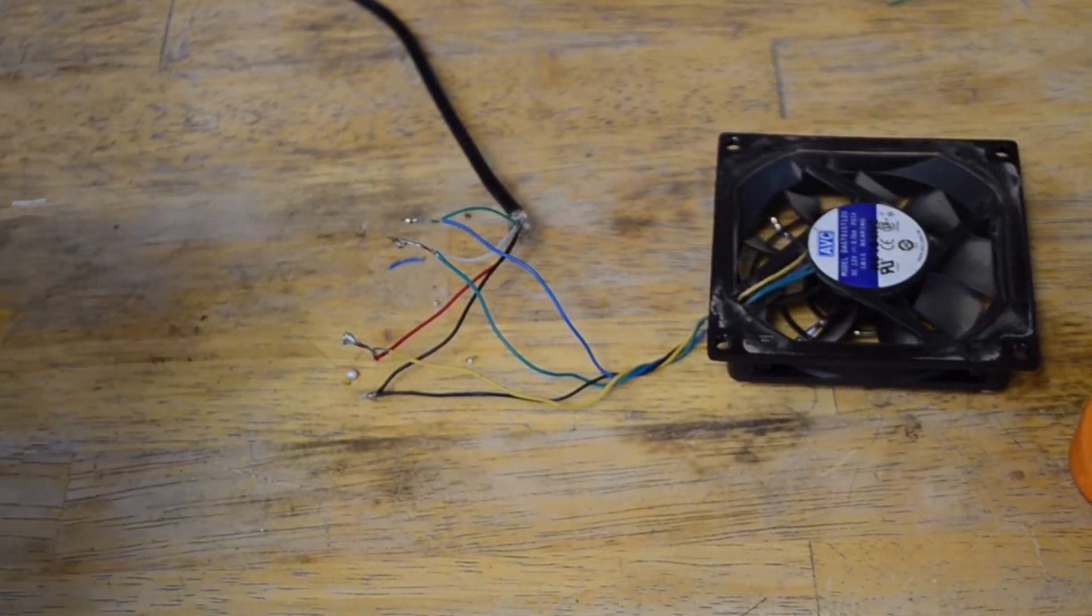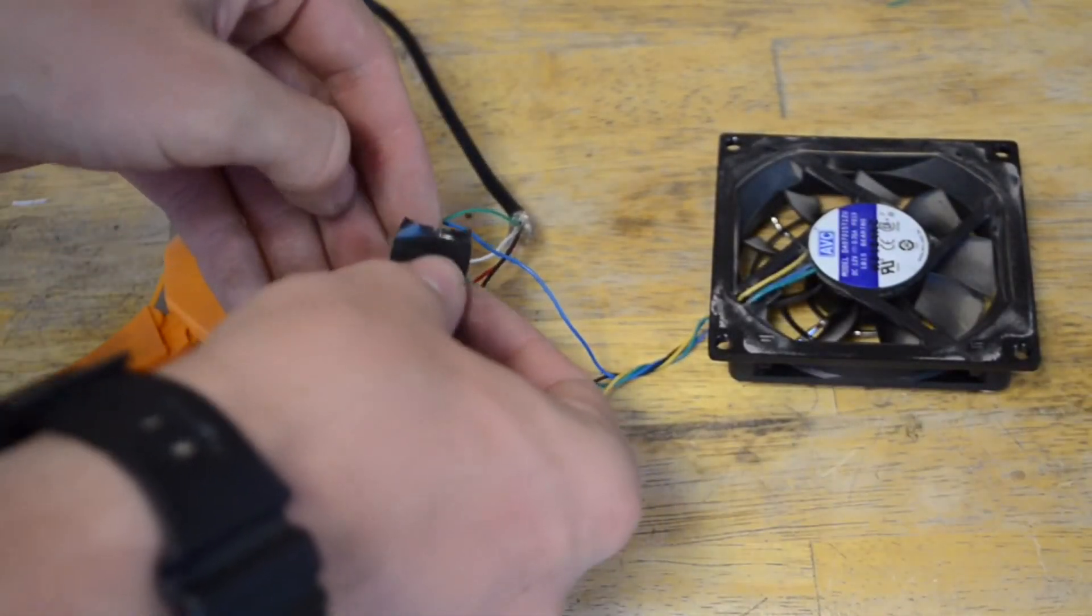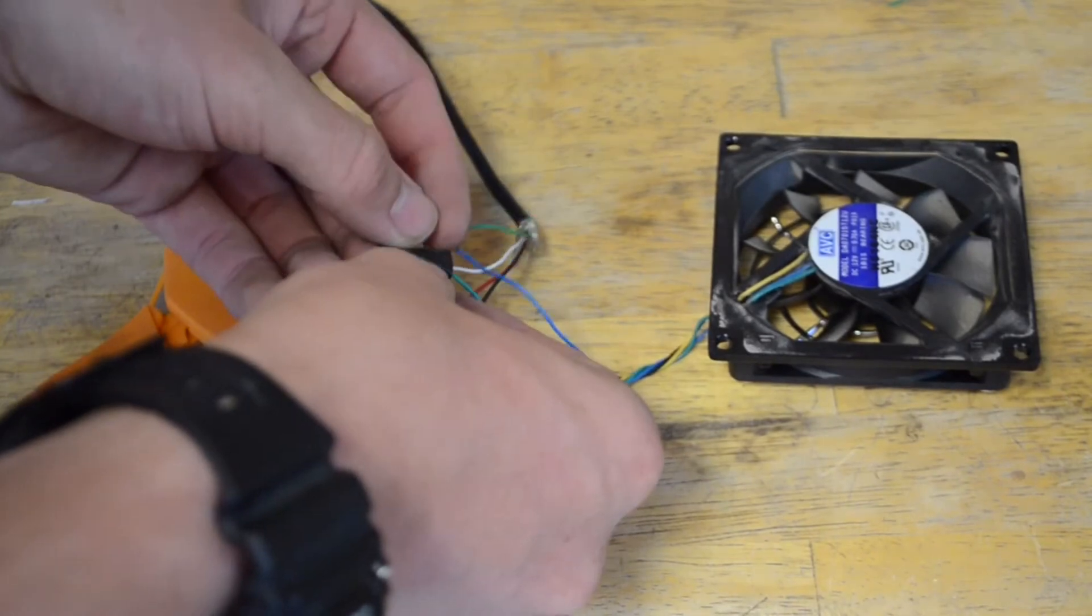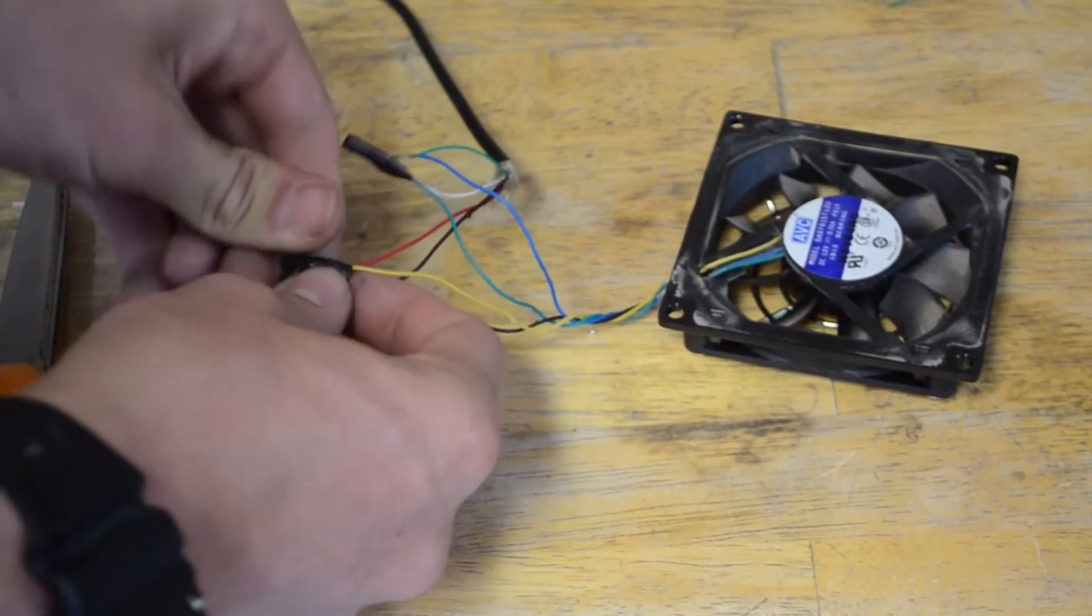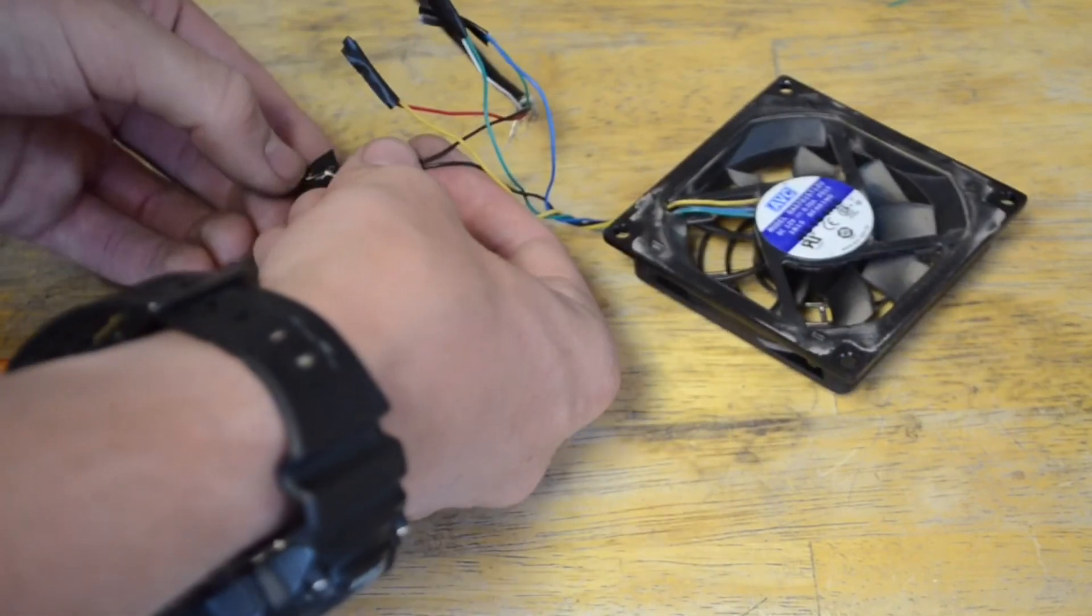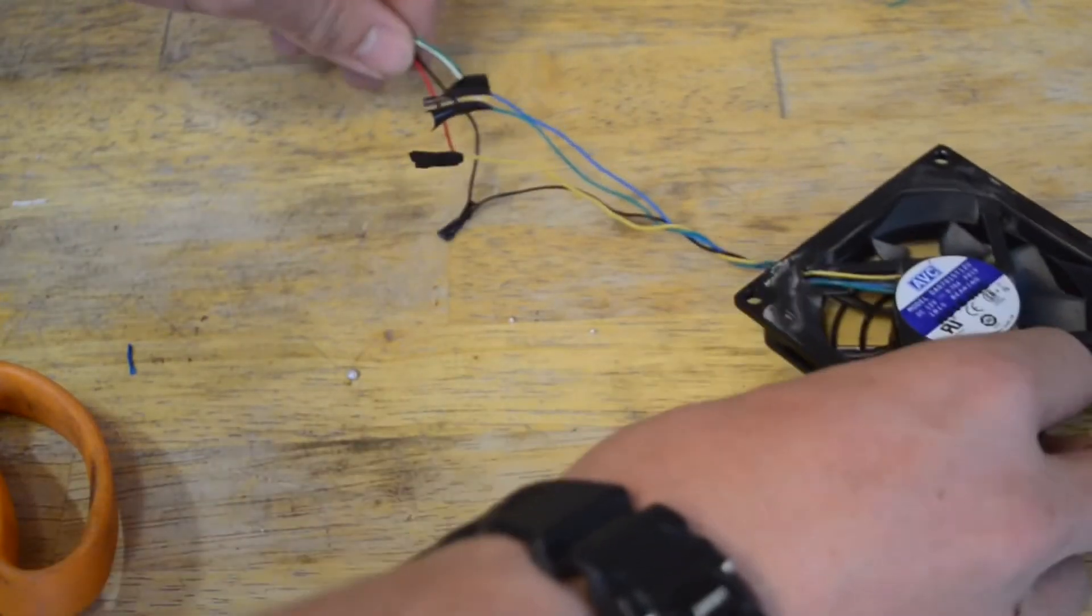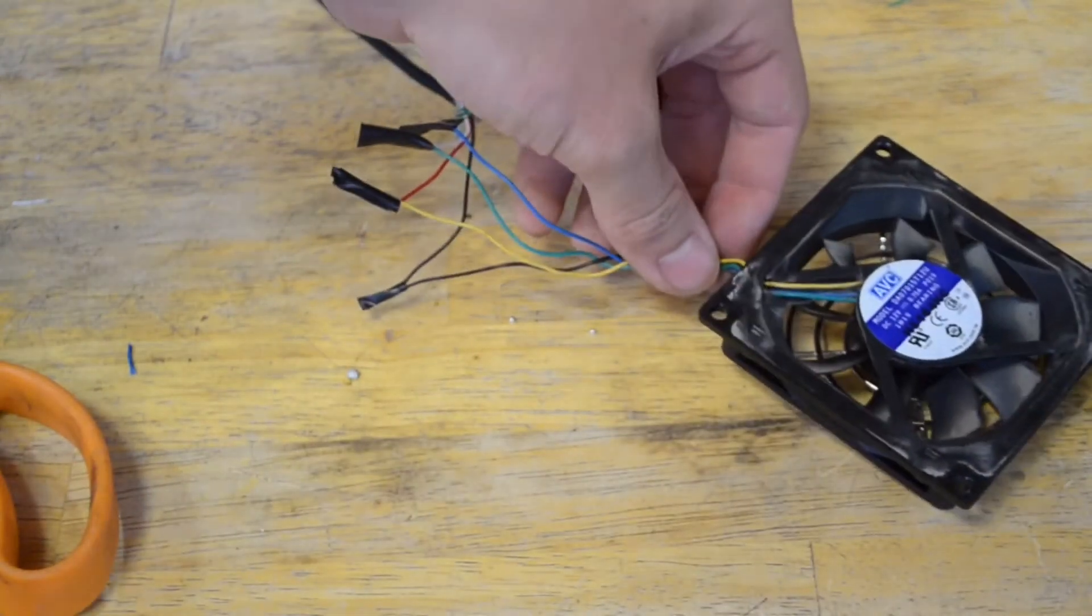Now I'm going to take small strips of electrical tape and wrap them around each of the wires. Once these are covered, we'll wrap all of this wire in electrical tape.